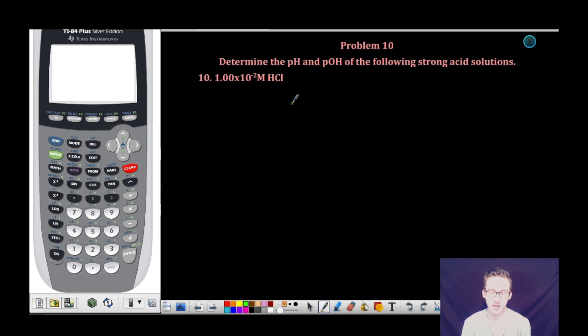Hey, what's up everybody? It's Mr. Boylan and we're back for some more acid-base chemistry calculating fun. If you take a look at problem number 10, we're asked to determine the pH and POH of the following strong acid solution. And our strong acid solution is a 1.00 times 10 to the negative 2 molar hydrochloric acid solution.